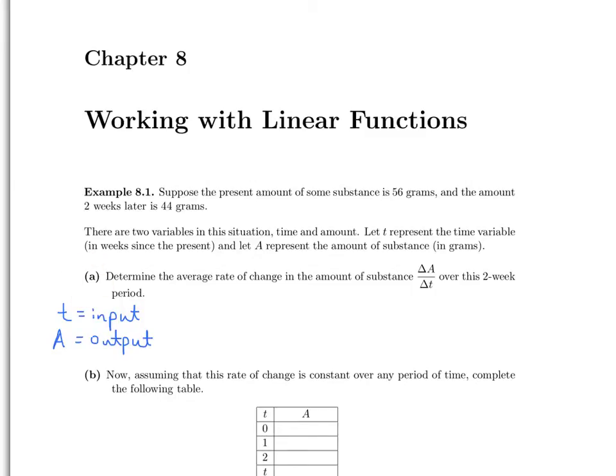So let's start by looking at part a. Let's determine the average rate of change in the amount of substance, in other words, ΔA over Δt, over this two-week period. Well, if you recall, the average rate of change in a quantity is the change in the output divided by the change in the input. In this case, it would be the change in the amount, A, over the change in time. So let's go ahead and calculate this fraction.